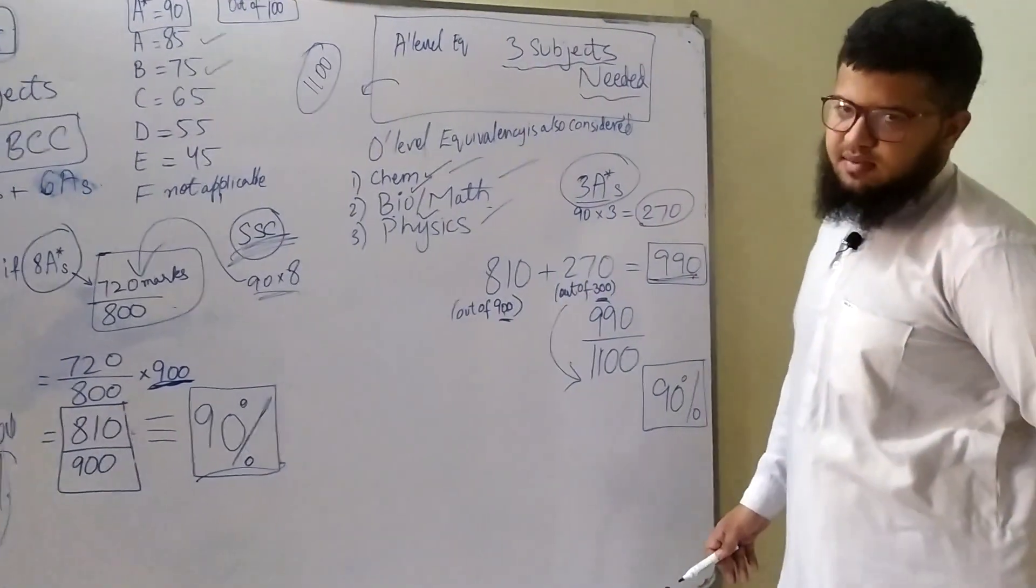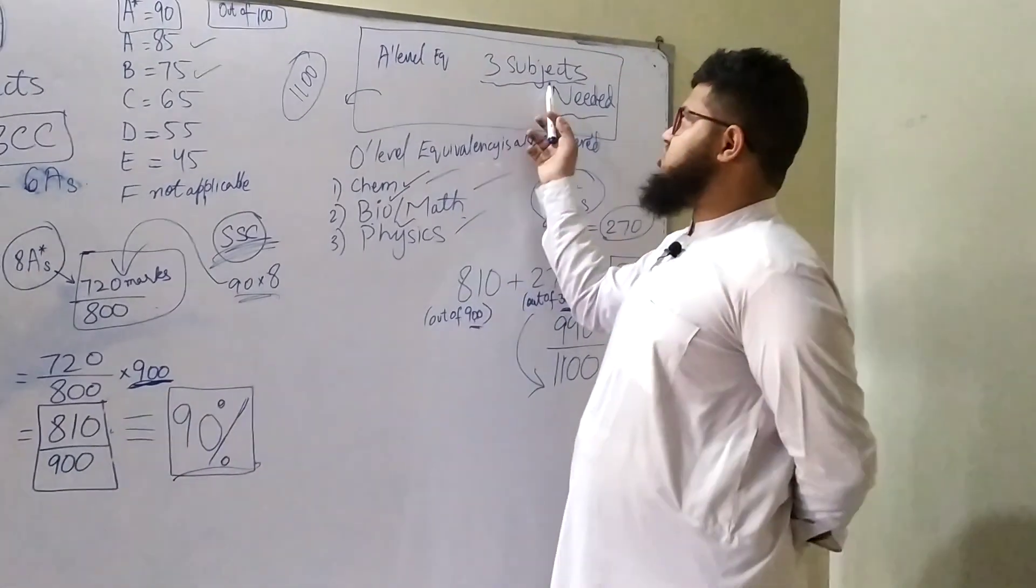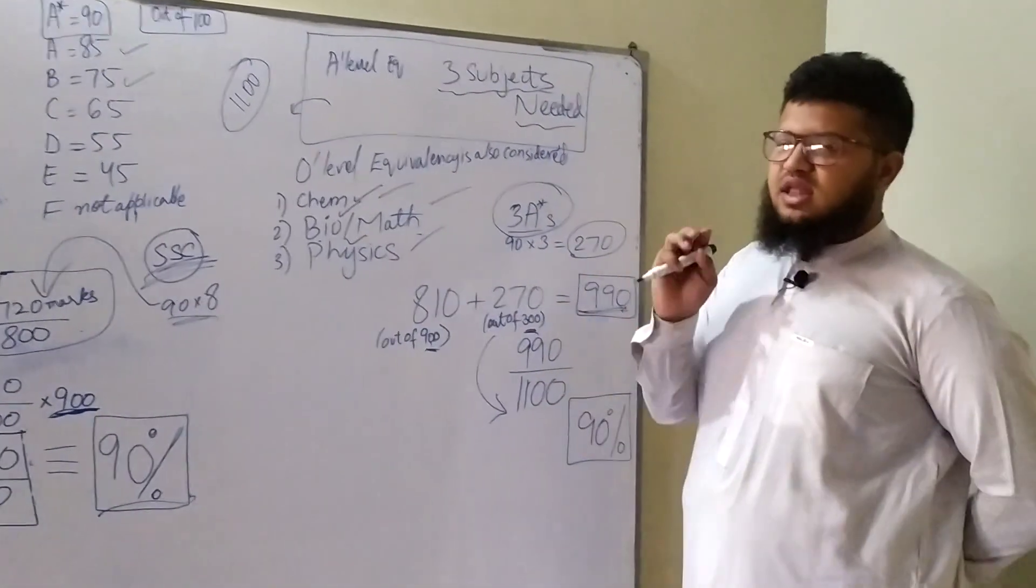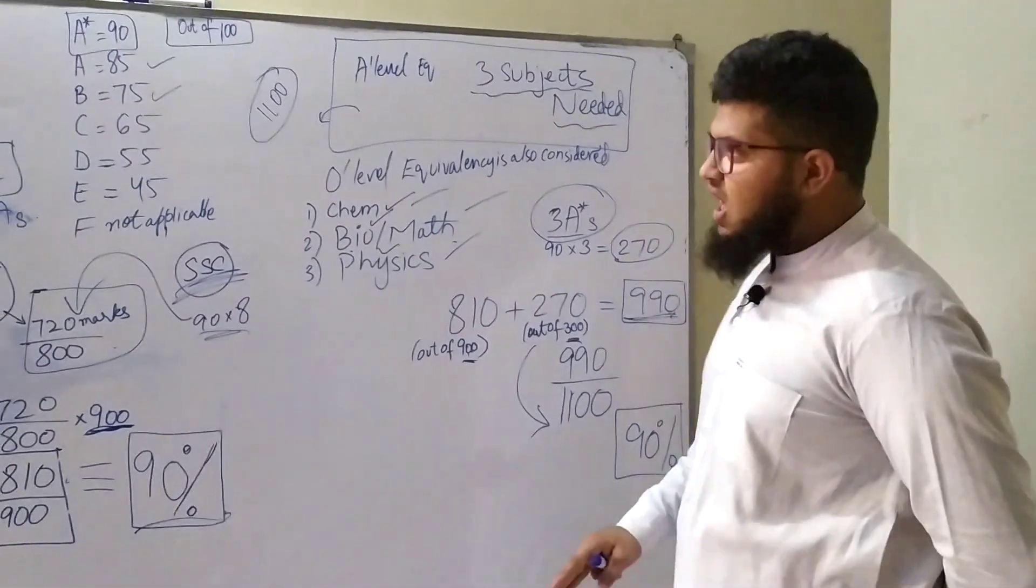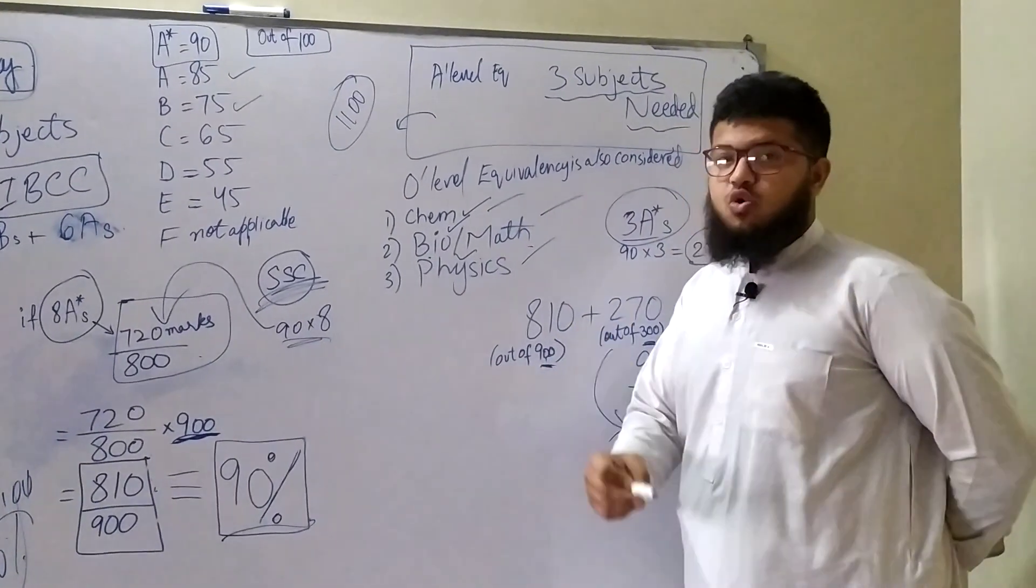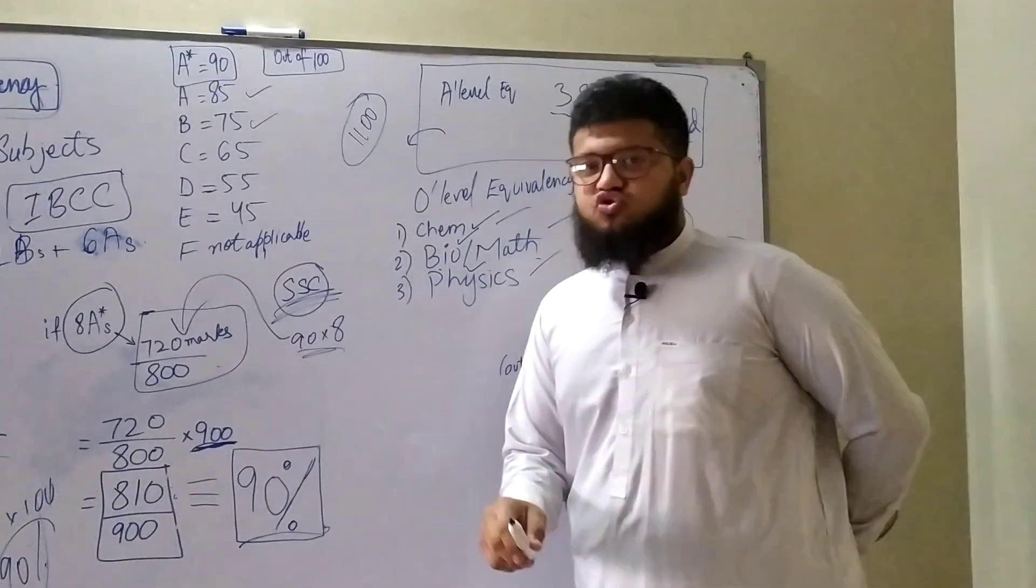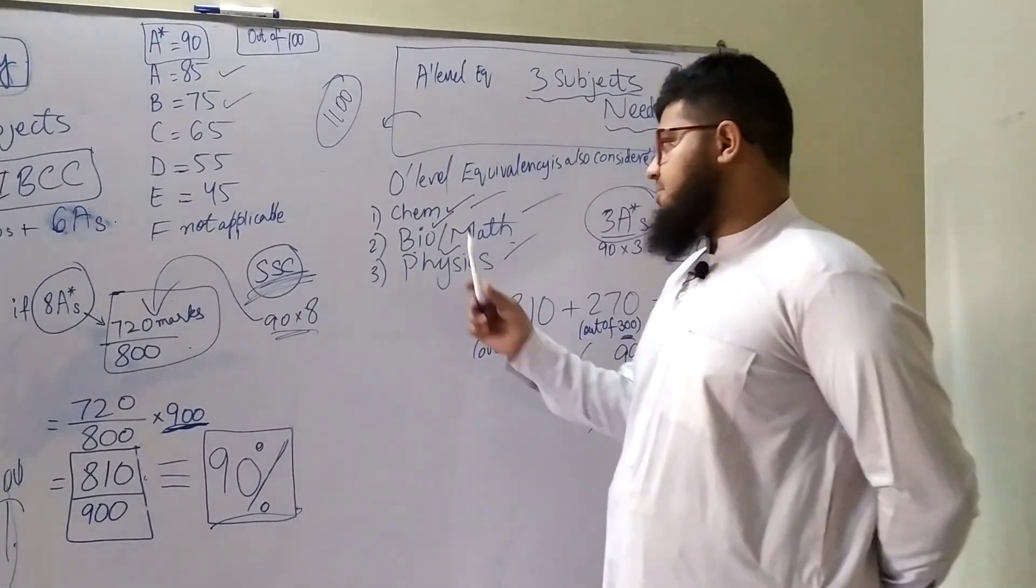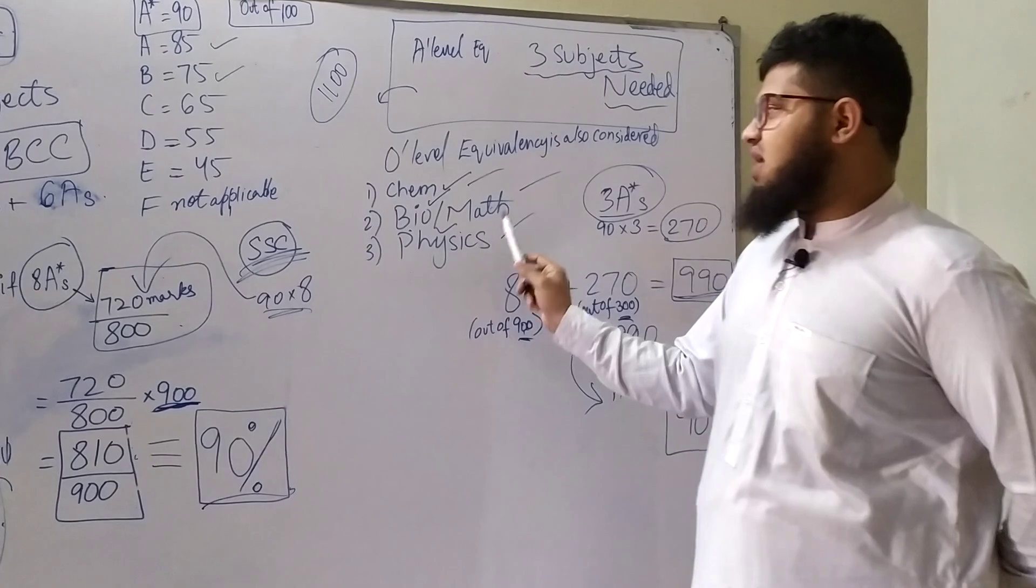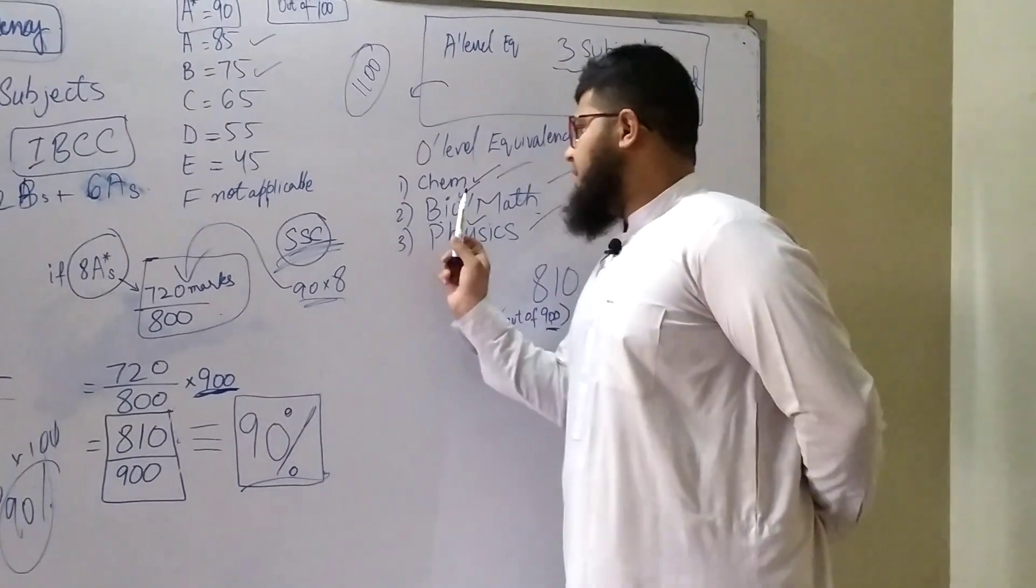Now let's talk about A-level equivalency. To calculate A-level equivalency, 3 major subjects are required, and only 3 subjects are required. If you have a 4th subject, that's gonna be an additional subject, it won't be counted. Chemistry, Biology and Physics is required for those students who are pursuing MBBS or medicine, whereas Chemistry, Math and Physics is required for students pursuing engineering.